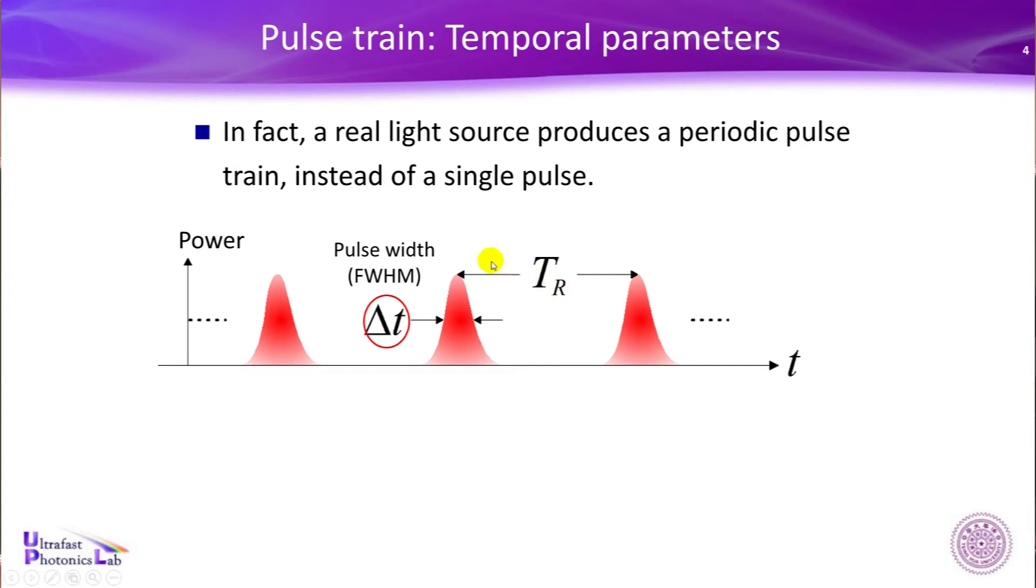How about TR? TR has a term, repetition period. You can easily identify the meaning. For every TR, you got the pulse. Repeatedly.